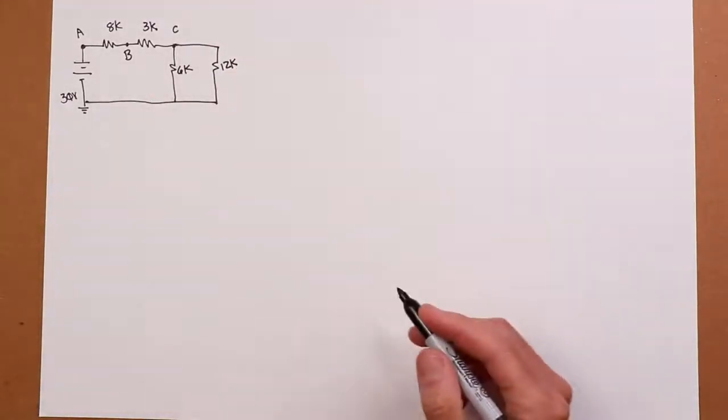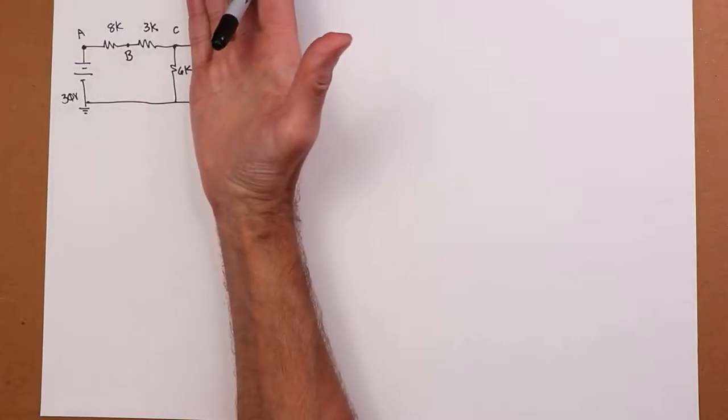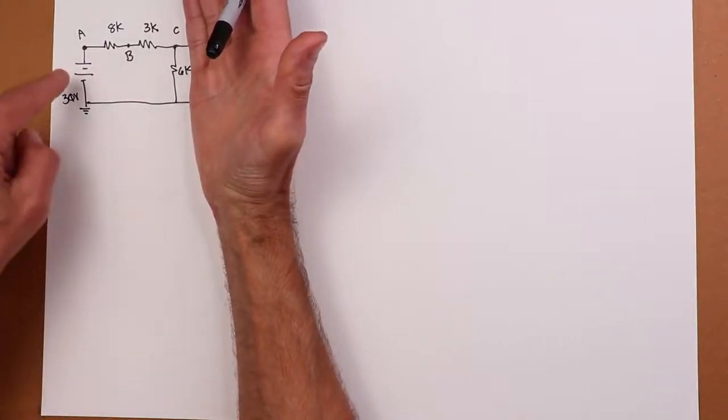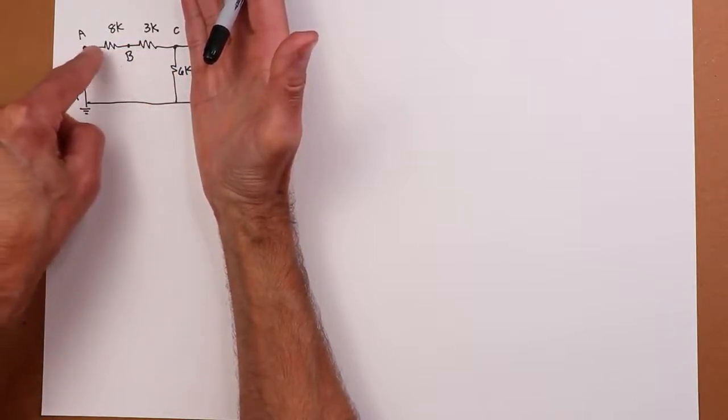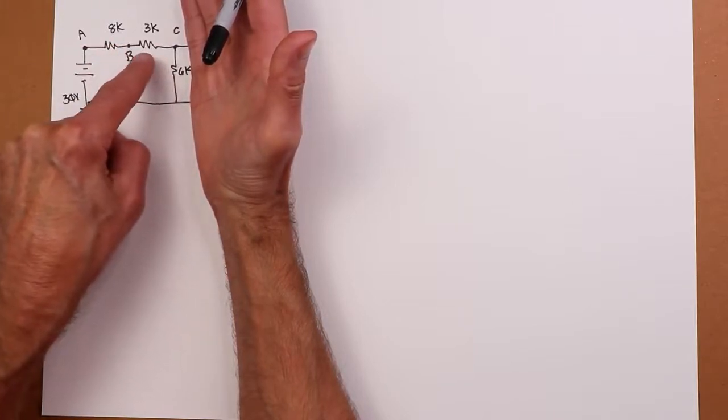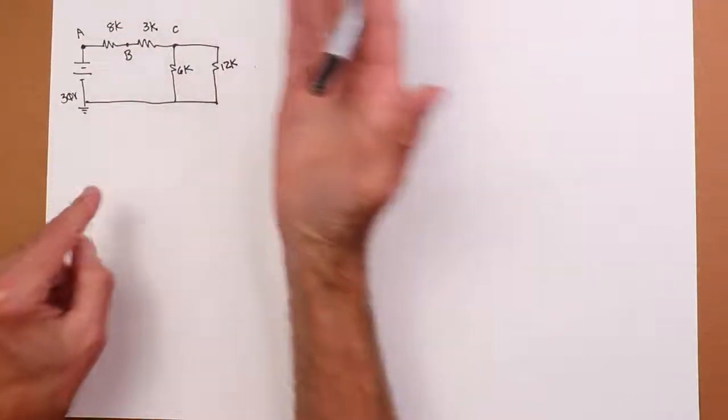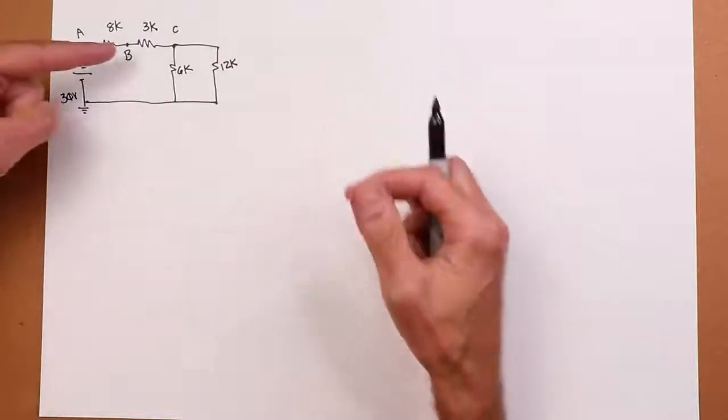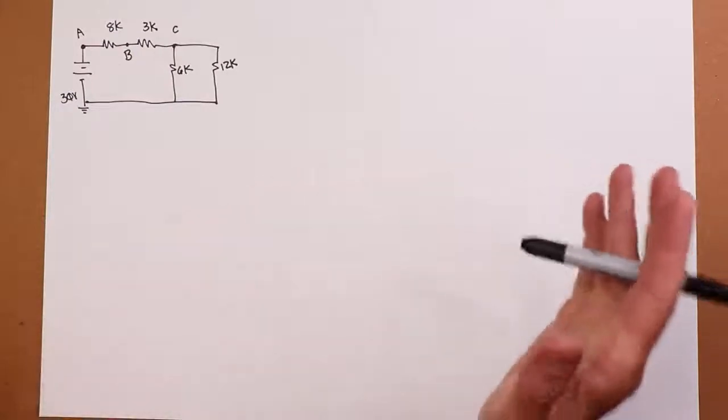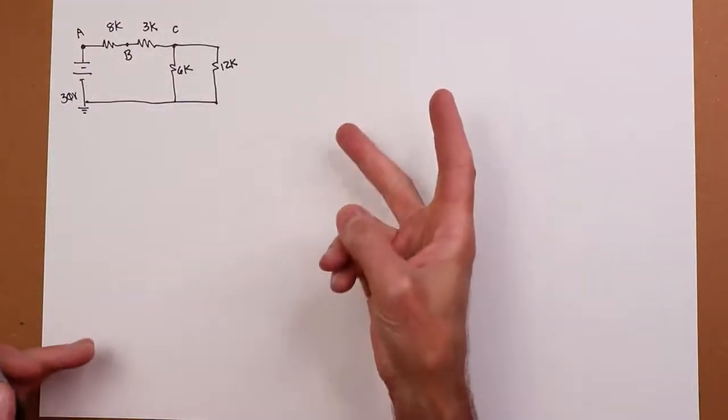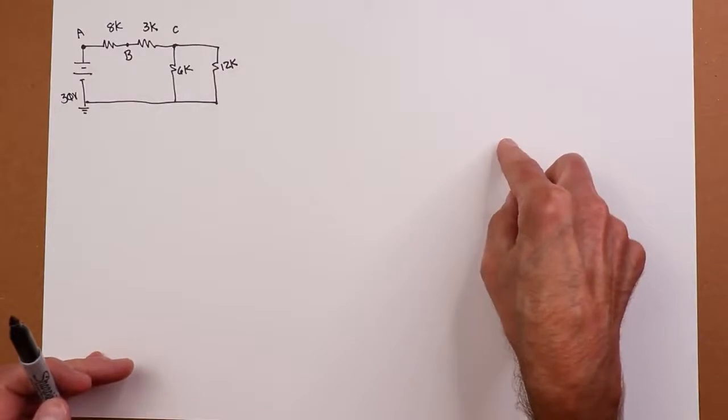All right, when we look at this circuit, we discover that it's not entirely series and it's not entirely parallel. If I got rid of this 12K, we would have a nice series circuit, right? Remember, for series, current through every component has to be the same. So the current through the 8K has to be the same as the current through the 3K. But with the 12K, that doesn't happen because the current would go through the 3K and at point C, it can split.